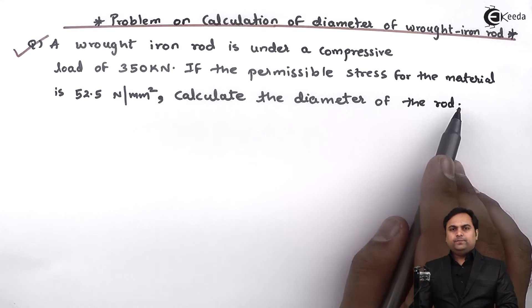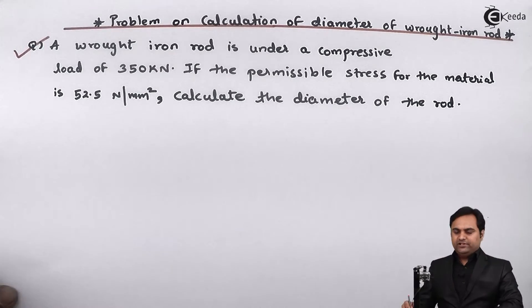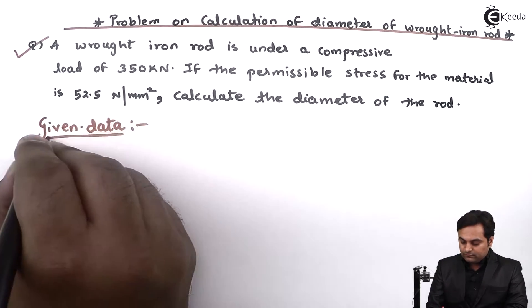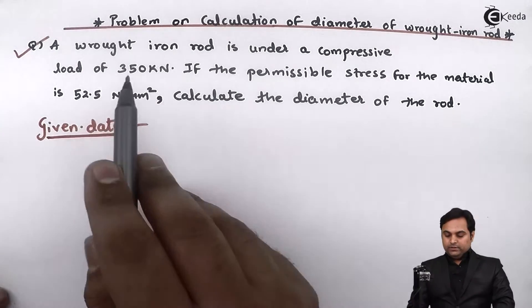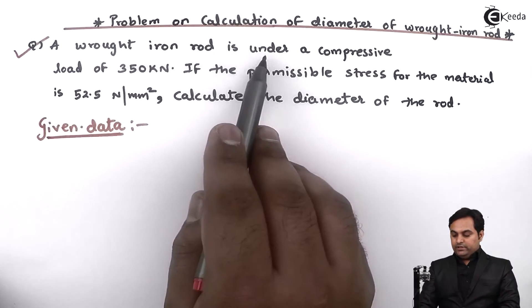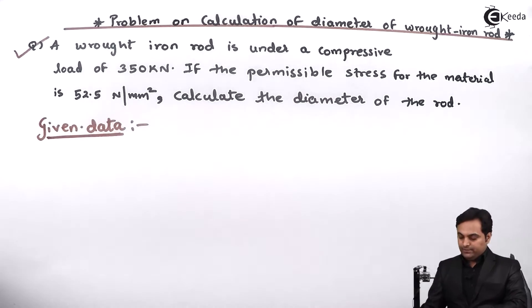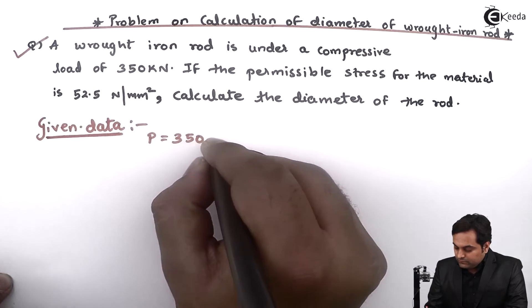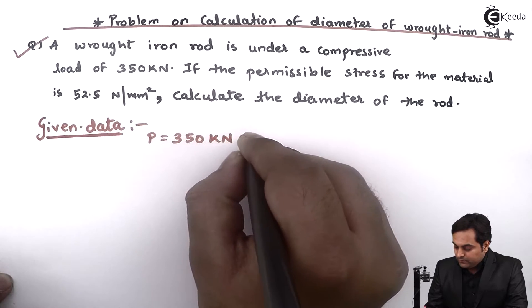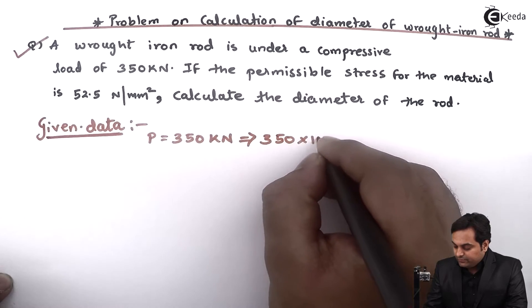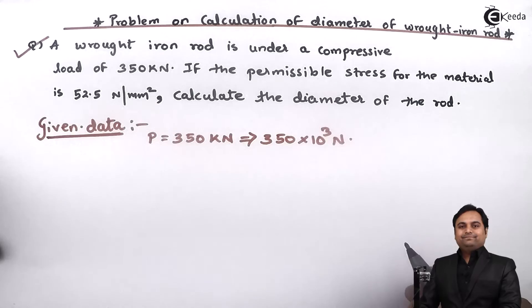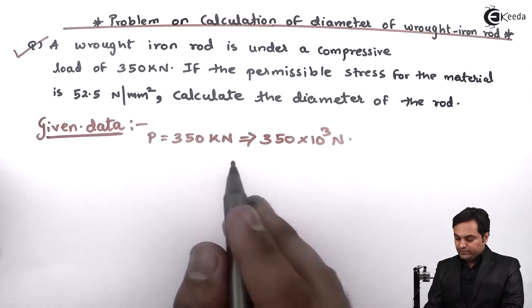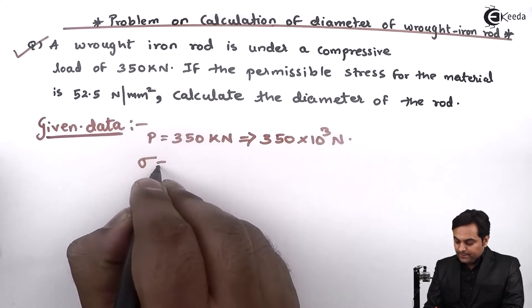calculate the diameter of the rod. Whatever is given here I'll write that in the form of data. Now here it is given a wrought iron rod is under a compressive load of 350 kilonewton, so load P is equal to 350 kilonewton. I'll convert it, it becomes 350 into 10 raise to 3 newton. If the permissible stress for the material is 52.5 newton per mm square, sigma is given